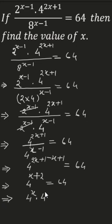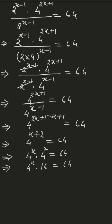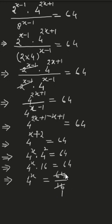We rewrite 4 to the power (x plus 2) as 4 to the power x times 4 squared, which equals 4 to the power x times 16, equal to 64.